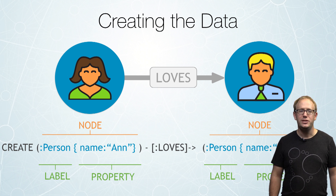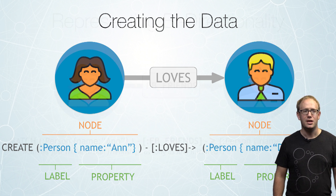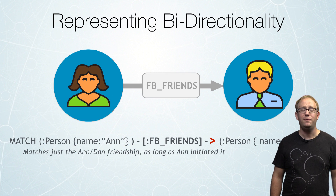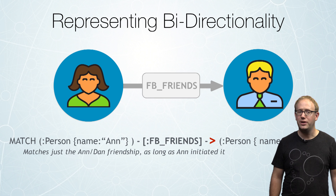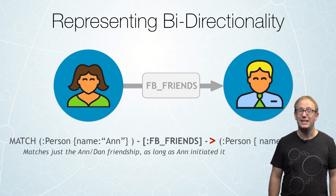Now if we did want to represent bidirectionality — say we had something like a Facebook friend relationship, where a friend relationship always exists in both directions — in that case we would probably represent it in the graph just in a single direction.